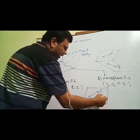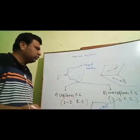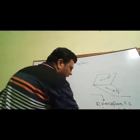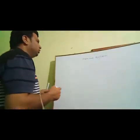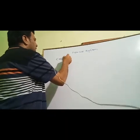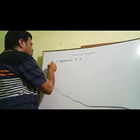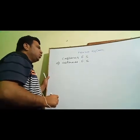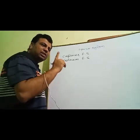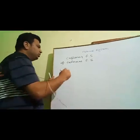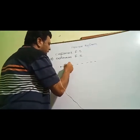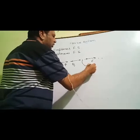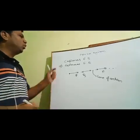Now these forces F and Q are acting in a single plane, so it will be an example of a co-planar force system. Co-planar force system is further classified. First is the collinear force system: if all the forces acting on a rigid body lie in one plane and have a single line of action, then it forms a collinear force system.